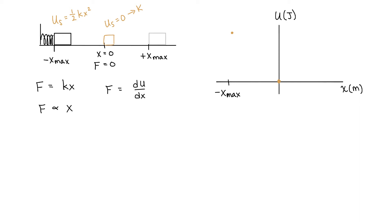As the object moves toward equilibrium, our force is decreasing. So we're heading from the starting point to the equilibrium point with a slope that is getting less steep. To draw a slope that's getting less steep, we draw a concave up curve. So we get kind of half a parabola on the left side of the graph.